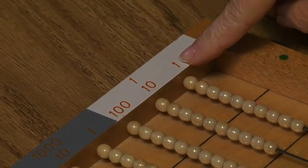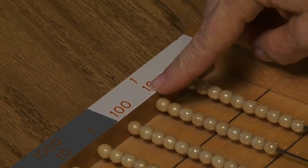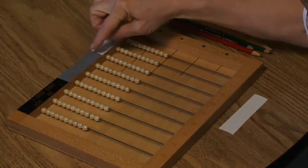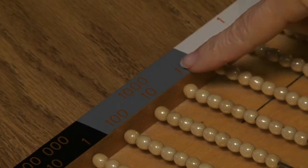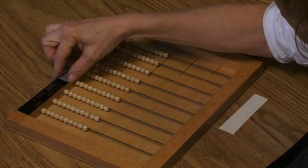Along the top of the bead frame we'll see the simple hierarchies: units, tens, hundreds with a white background, the hierarchy of thousands, units of thousands, tens of thousands, hundreds of thousands with a gray background.